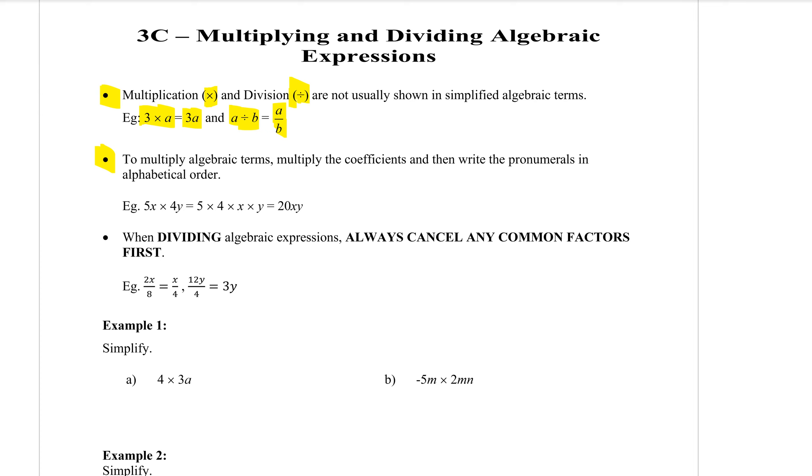When dividing an algebraic expression, always cancel any common factors first. For example, 2X over 8X, both of those can be divided by 2. If I divide by 2, then I only have the X left and 8 divided by 2 gives 4. I'll show you how to simplify those on your calculator as well.